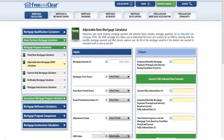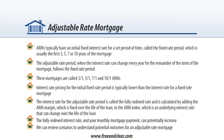I'm going to briefly review an Adjustable Rate Mortgage before I walk through the calculator step by step. ARMs typically have an initial fixed interest rate for a set period of time, called the Fixed Rate Period, which is usually the first 3, 5, 7, or 10 years of the mortgage, and then convert into an annual Adjustable Rate Mortgage when the interest rate can change every year for the remainder of the term. This is known as the Adjustable Rate Period.